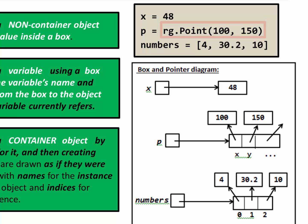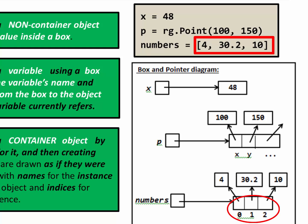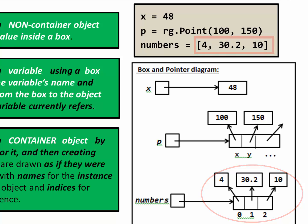Sequences are also container objects. A sequence has a first element, a second one, another one, and they're labeled with indices 0, 1, 2, etc., with arrows drawn from each of those labels to the object to which they refer.